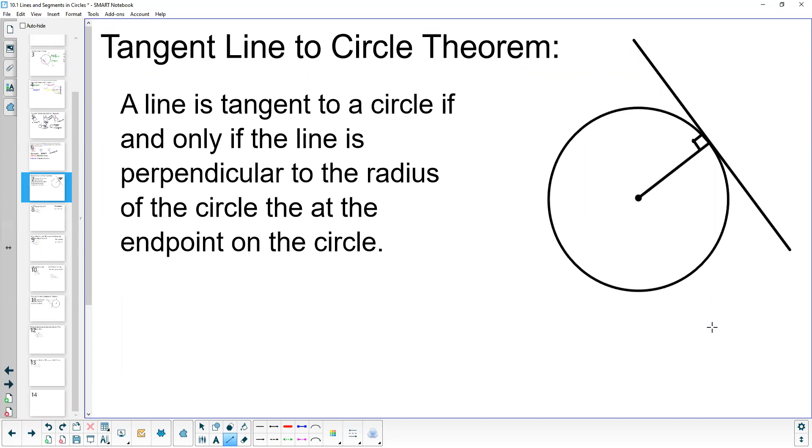So what does that mean? If we want to determine whether a line is truly tangent to a circle, that tangent has to be perpendicular to the radius from the center of the circle to the point of tangency. We can use the Pythagorean theorem to determine whether a line is actually tangent to a circle.